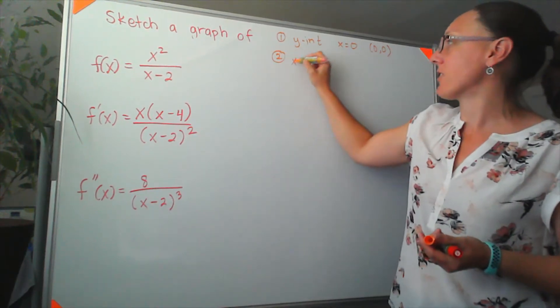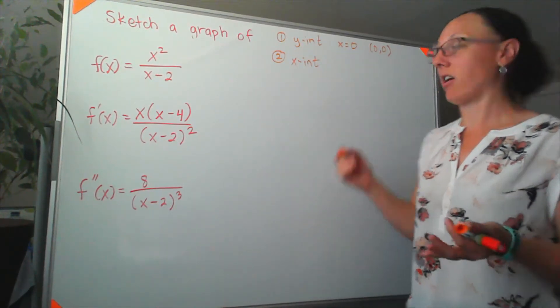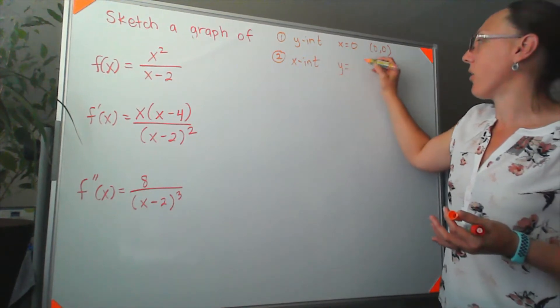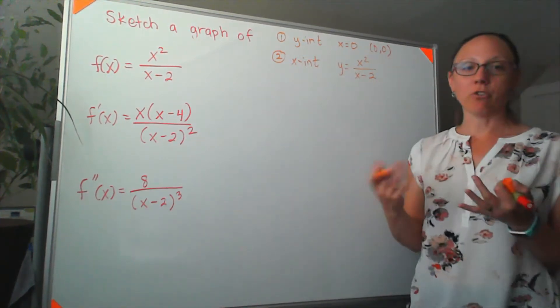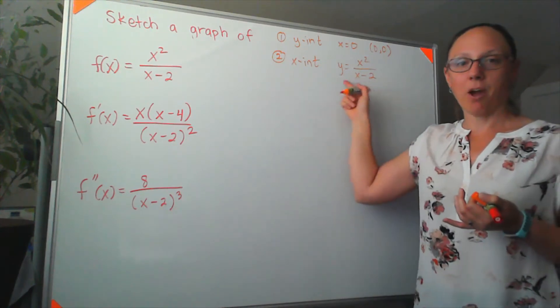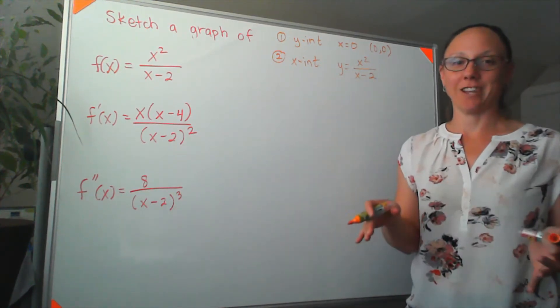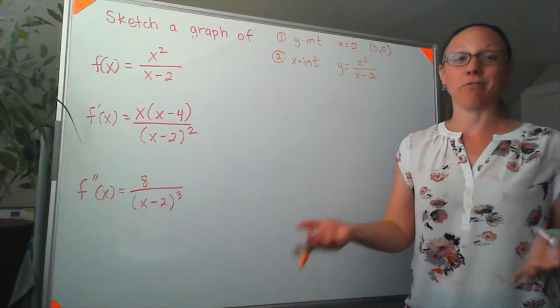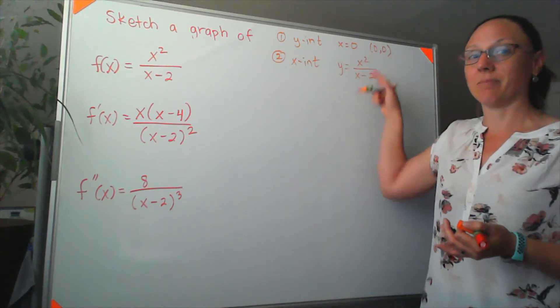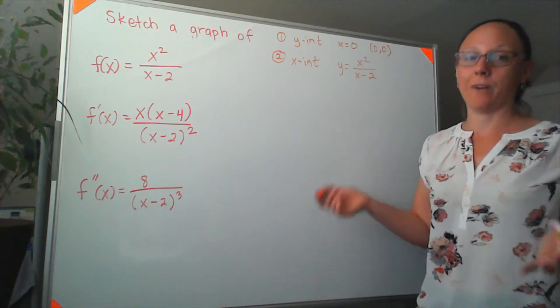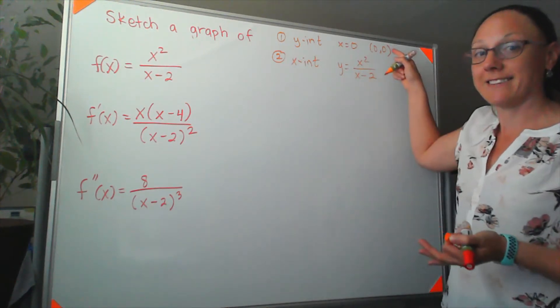For my x-intercepts, those are happening when y is equal to zero. And if I set y equal to zero, now I'm looking at x squared over x minus two. Well, one trick with rational functions, if the bottom is zero, that's not an intercept. That's actually telling us to look for a vertical asymptote. So I really only have to pay attention to the numerator, and there's only one way that that's zero, when x is zero. So I'm actually getting the same intercept.